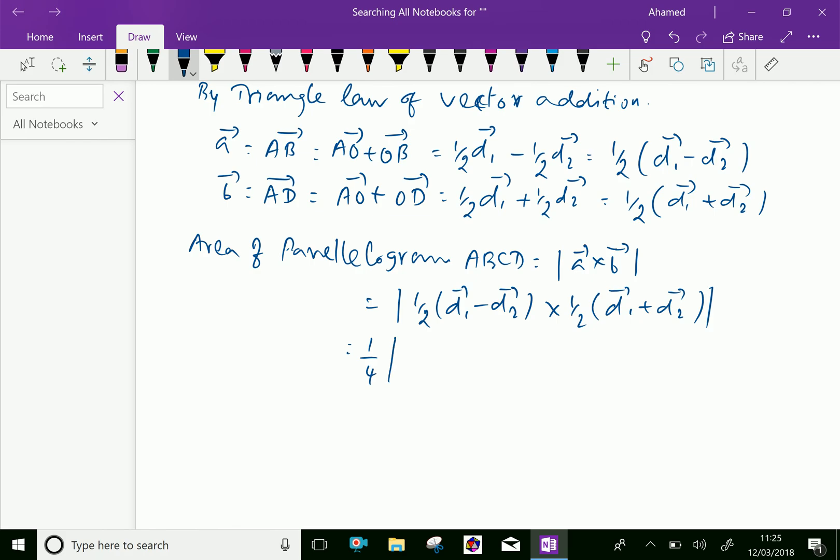Now, this half into half is 1 by 4 takeout. And we have, we will multiply with vector D1 minus D2 into vector D1 plus D2.